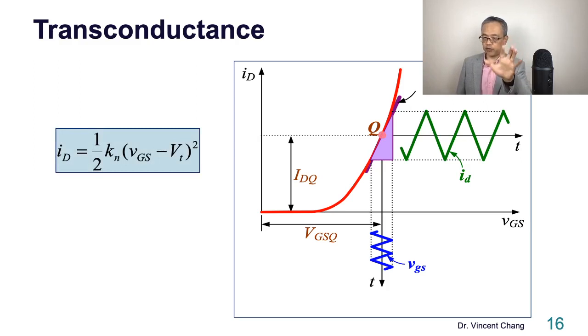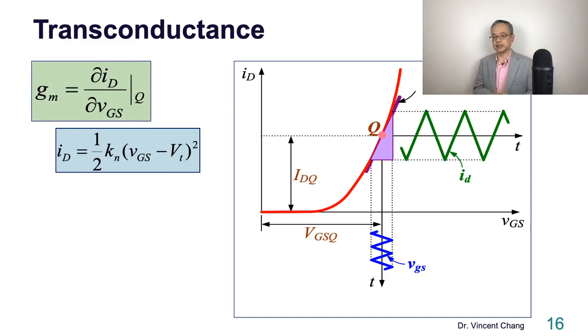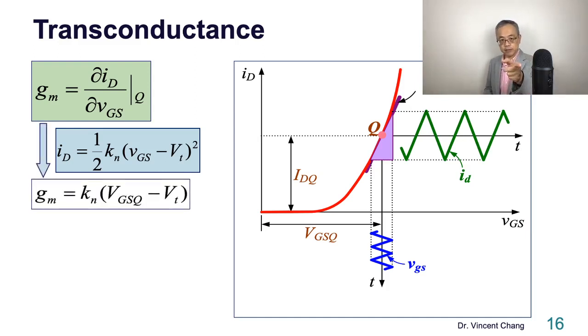Now, let's do a little bit of mathematical derivation to find out GM's formulation, the transconductance formulation. According to the concept of the calculus, basically, a straight line can be approached by the partial derivative, the derivative of at the Q-point. Partial ID, partial VGS. Let's just take the derivative of this parabola, and then you will get this. So 2 becomes 1, the power of 2 becomes derivative, right? So becomes 1, and 2 cancel down, the 1 over 2, then becomes this.